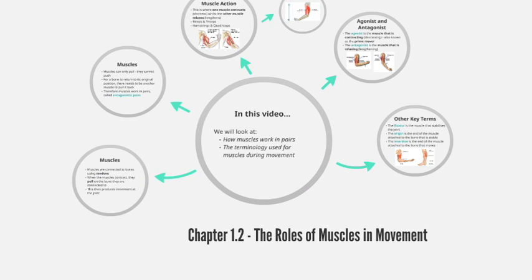To summarise: muscles pull and cannot push, so they work in pairs called antagonistic pairs — one muscle contracting whilst the other relaxes. Key terms are: the agonist, the muscle contracting, also known as the prime mover; the antagonist, the muscle relaxing; the fixator, which stabilises the joint; the origin, the end of the muscle connected to the stable bone; and the insertion, the opposite end connected to the bones that move.